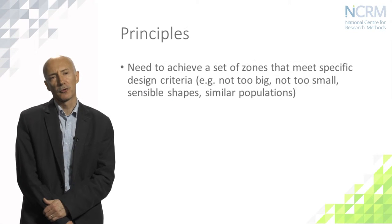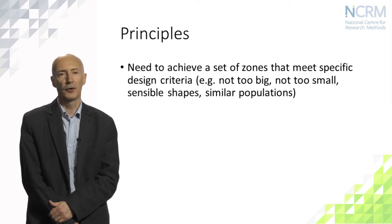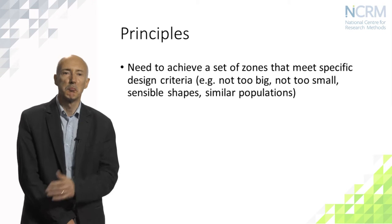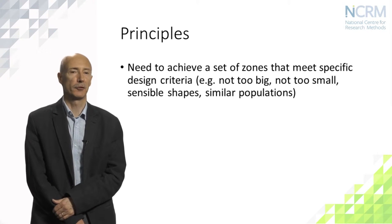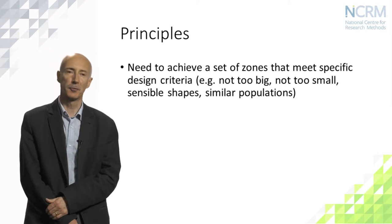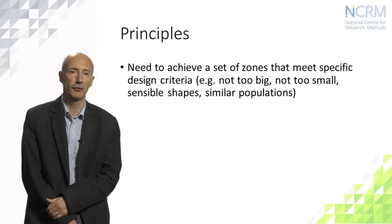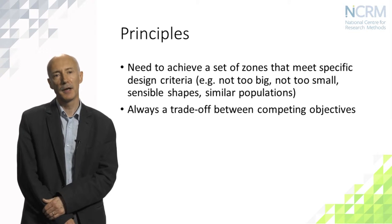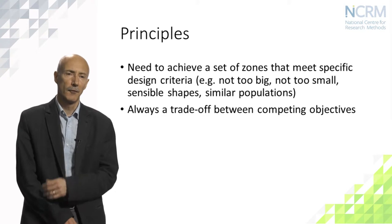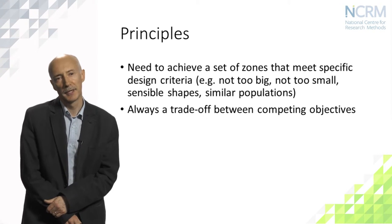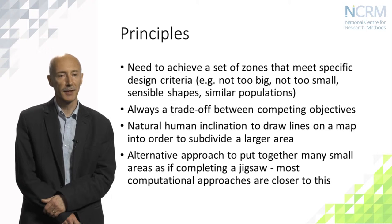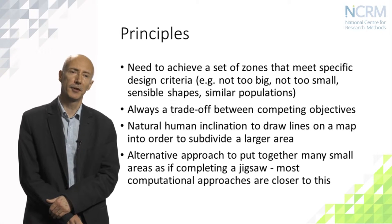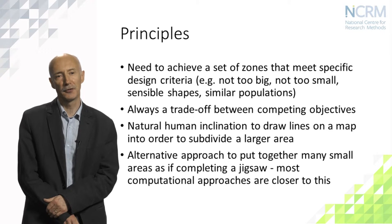The problem we're trying to solve in automated zone design is to find a means of achieving a set of zones that meet specific design criteria. For example, we might want zones that are not too big, not too small, that are sensible shapes on the map, or which have similar populations. Inevitably this will always be a trade-off between competing objectives. A natural human inclination is to draw lines on a map to subdivide a larger area.